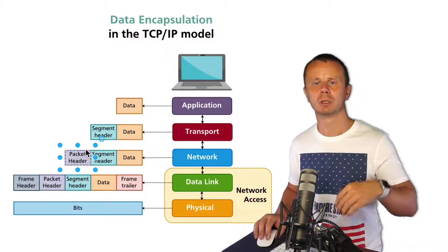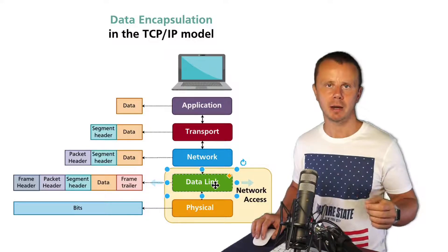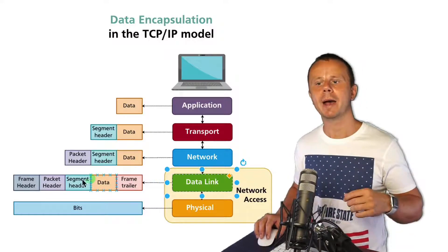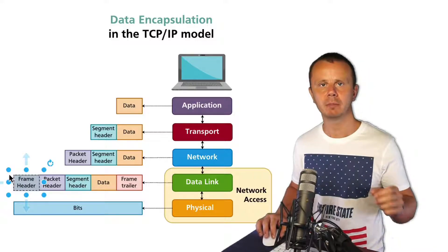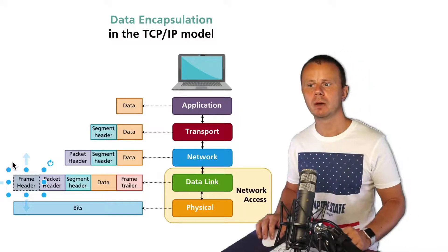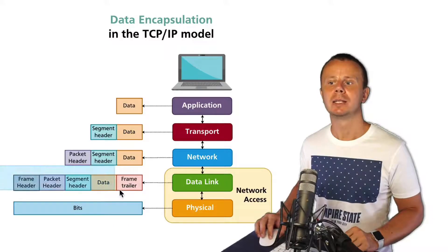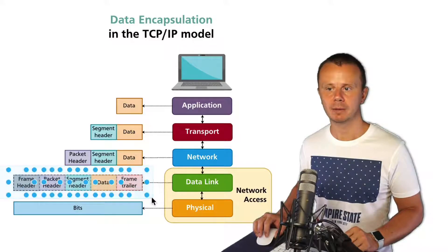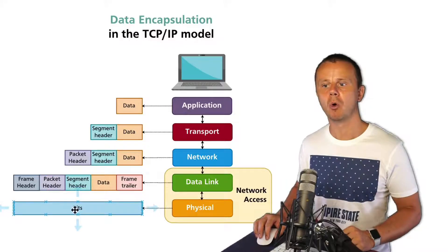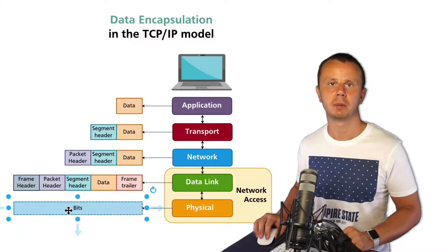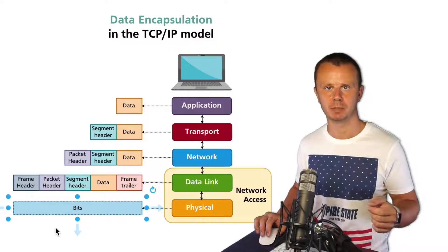Data then goes to the data link layer, and on the data link layer we add one more header — the frame header. A frame is the PDU for the data link layer. Finally, this data along with all added headers is transmitted over the physical media, represented as bits — zeros and ones.